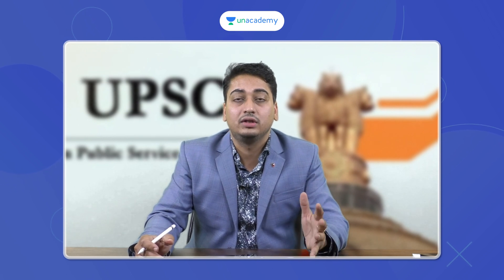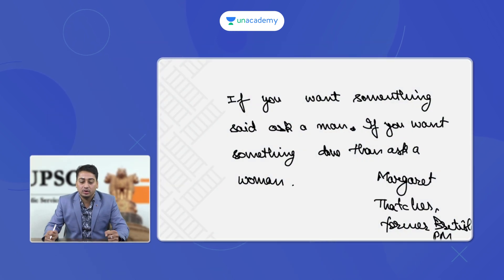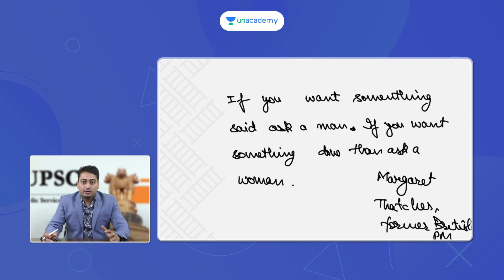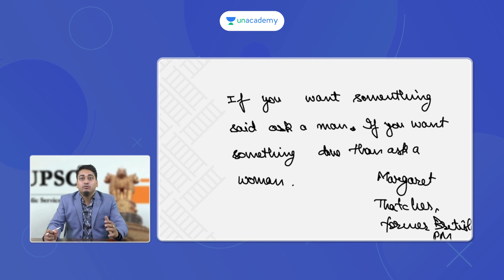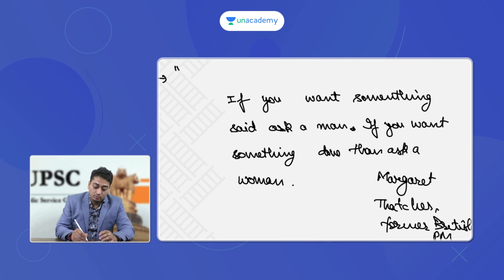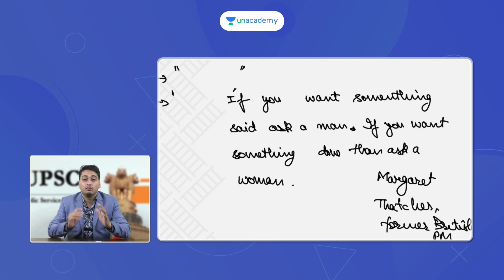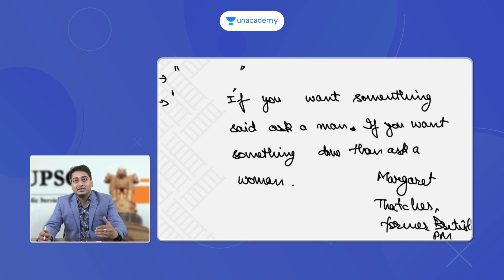In this video we will discuss how to make use of quotes effectively. For example, we will take a famous quote by former British Prime Minister Margaret Thatcher: 'If you want something said, ask a man; if you want something done, ask a woman.' There are two ways to cite it — if you know it exactly, use double commas; if you are paraphrasing, use single commas.